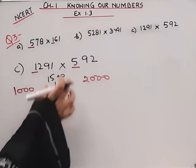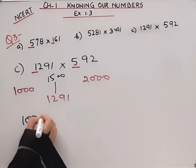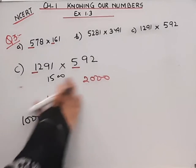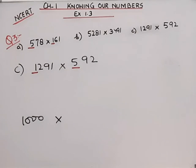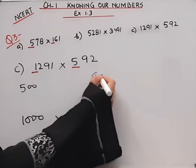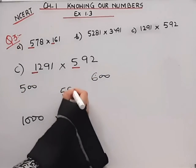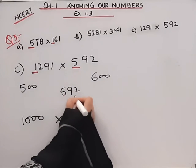Can you see what it is? 1291 is close to 1000, and 592 is close to 600, which means 592 is close to 600 or 500.